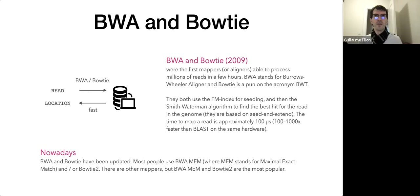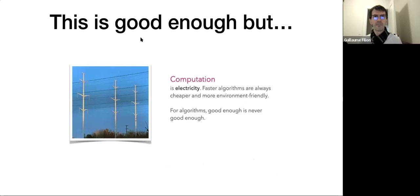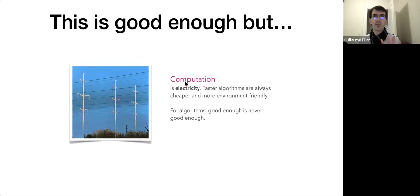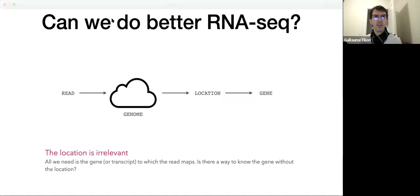BWA and Bowtie are free software and we're going to use them next week. But computation is electricity, and faster algorithms are always cheaper and more environmentally friendly. Good enough is never good enough — if you can do better, you should. If you can do these things 10 or 100 times faster, it also means saving 10 to 100 times more electricity, which nowadays also means saving a lot of CO2.